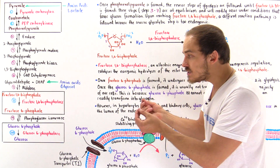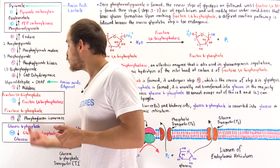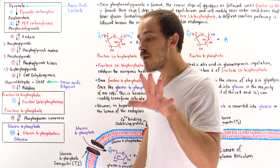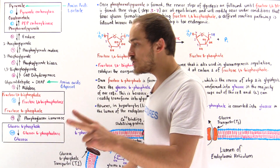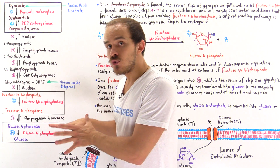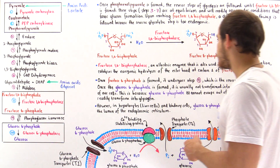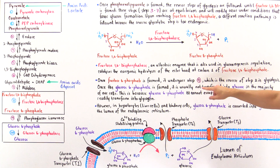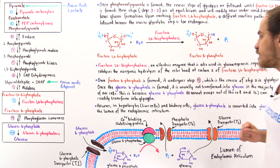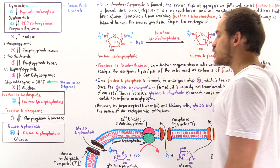If the cell wants to form glycogen, there is no reason to first convert to glucose and then re-phosphorylate it. So in the majority of muscle cells like skeletal muscle, this final step doesn't take place for two reasons: first, to ensure glucose doesn't leave the cell; second, to keep it in a form easily converted to glycogen. Glucose 6-phosphate is usually not transformed into glucose in the majority of our cells.